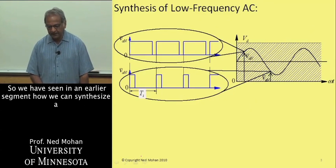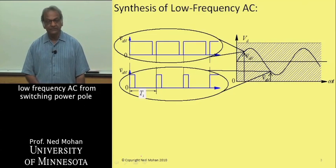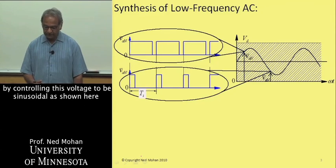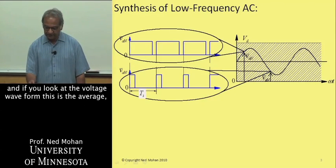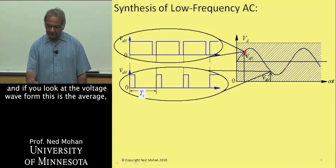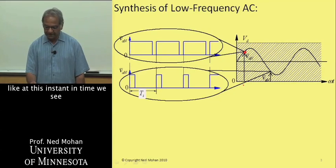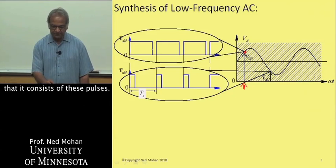We have seen in an earlier segment how we can synthesize a low-frequency AC from a switching power pole by controlling its voltage to be sinusoidal. If you look at the voltage waveform, this is the average. But if you look in detail what this waveform looks like at this instant of time, we see that it consists of these pulses.